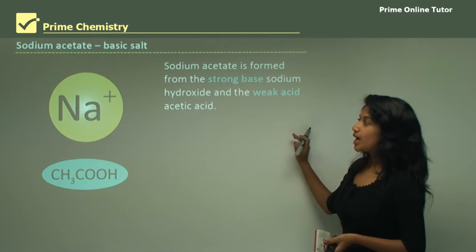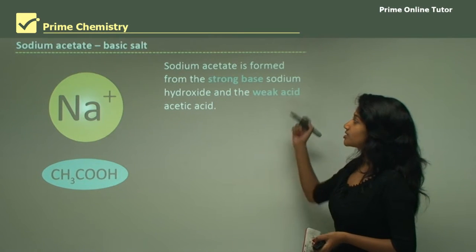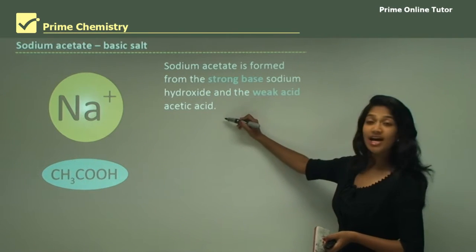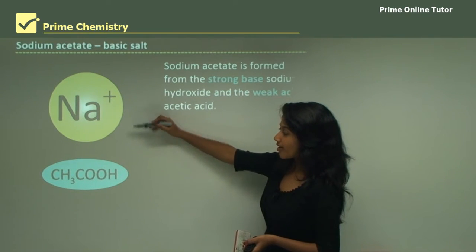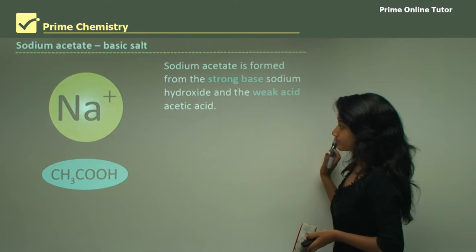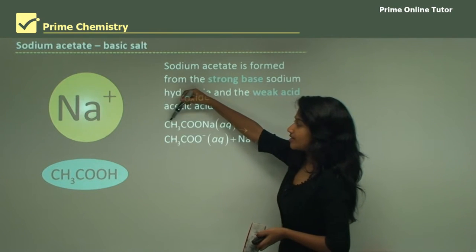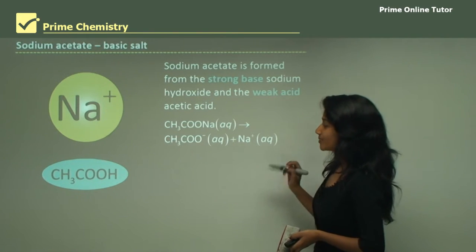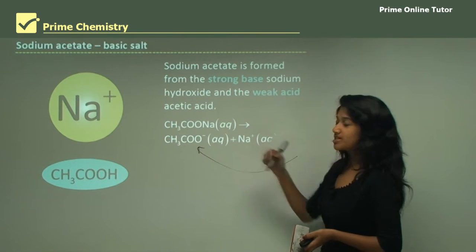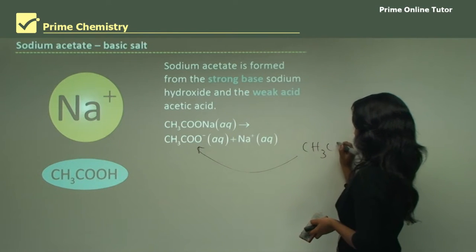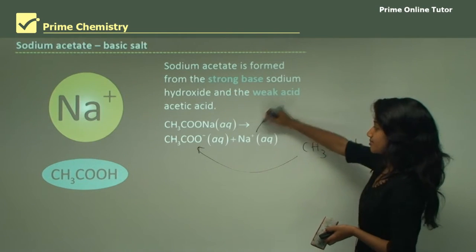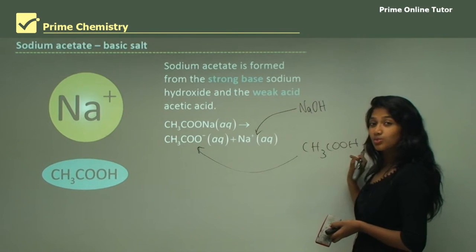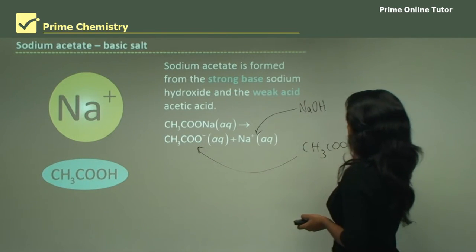Now looking at a basic salt — sodium acetate. Sodium acetate is formed from the strong base sodium hydroxide and the weak acid acetic acid. It gives an acetate ion and a sodium ion. The acetate ion comes from acetic acid (a weak acid) and the sodium ion comes from sodium hydroxide (a strong base). A strong base and weak acid gives a basic salt.